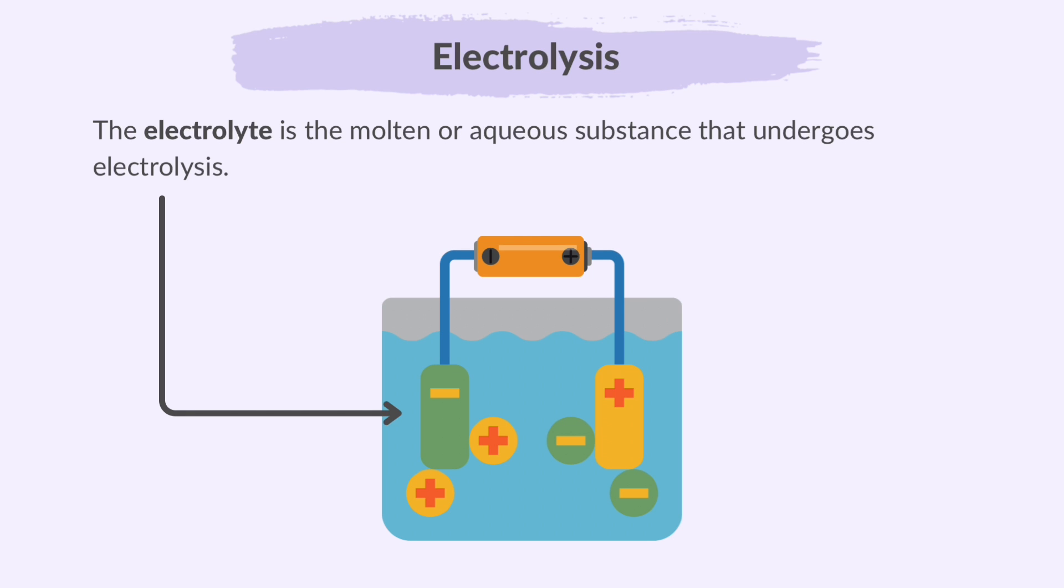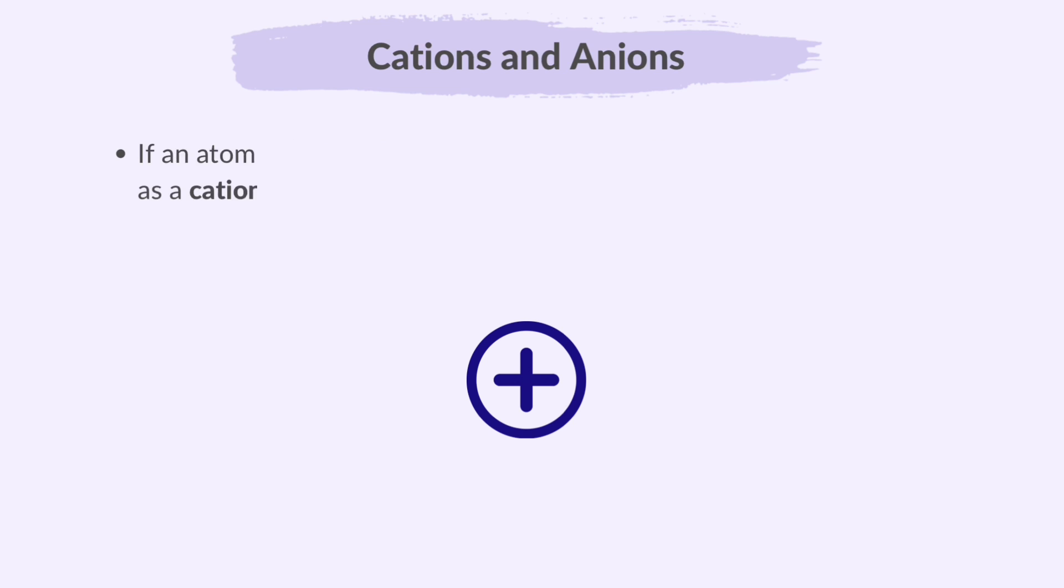Molten means heated until it becomes a liquid and aqueous means dissolved in water. Now just a quick reminder, if an atom loses electrons, it becomes a positively charged ion, known as a cation.